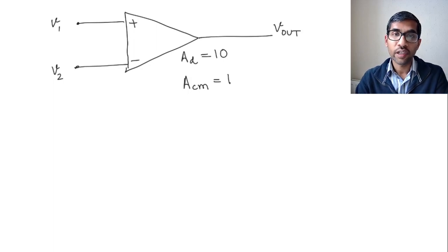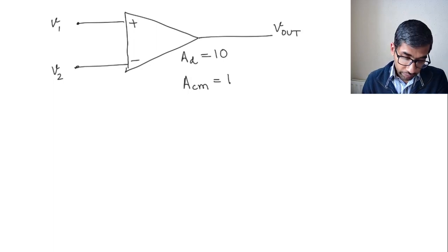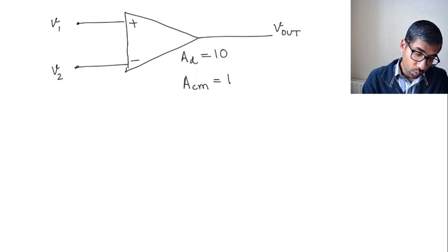Okay, so let's take a look at this op-amp where the differential gain is given by 10 and the common mode gain is given by 1.